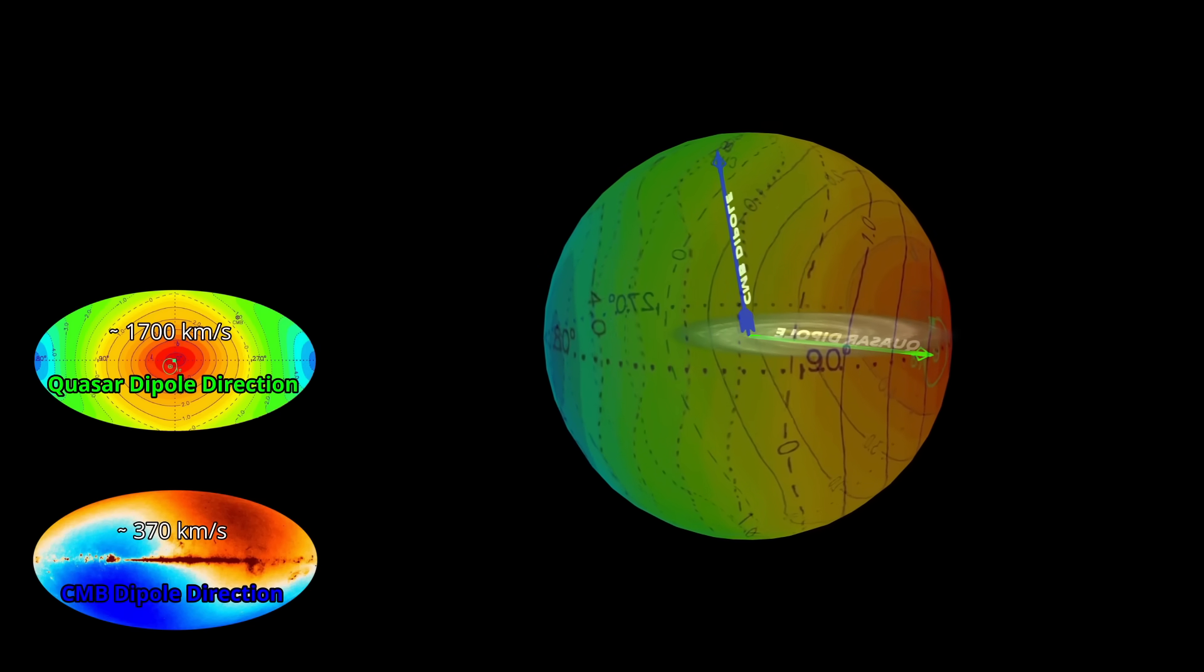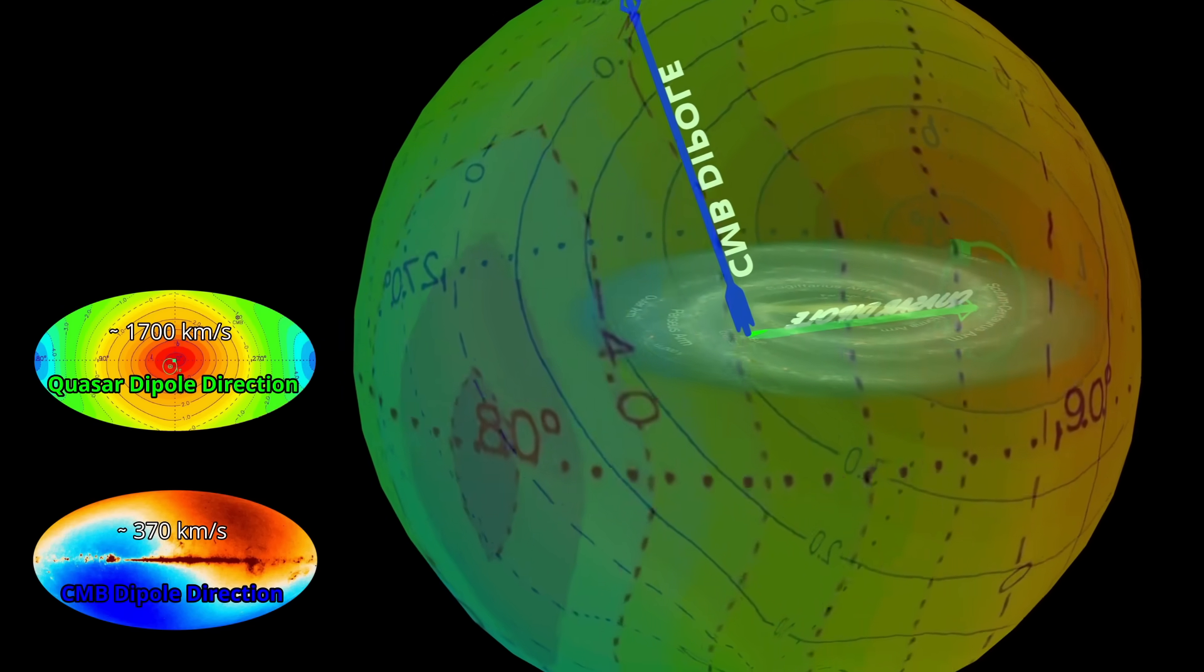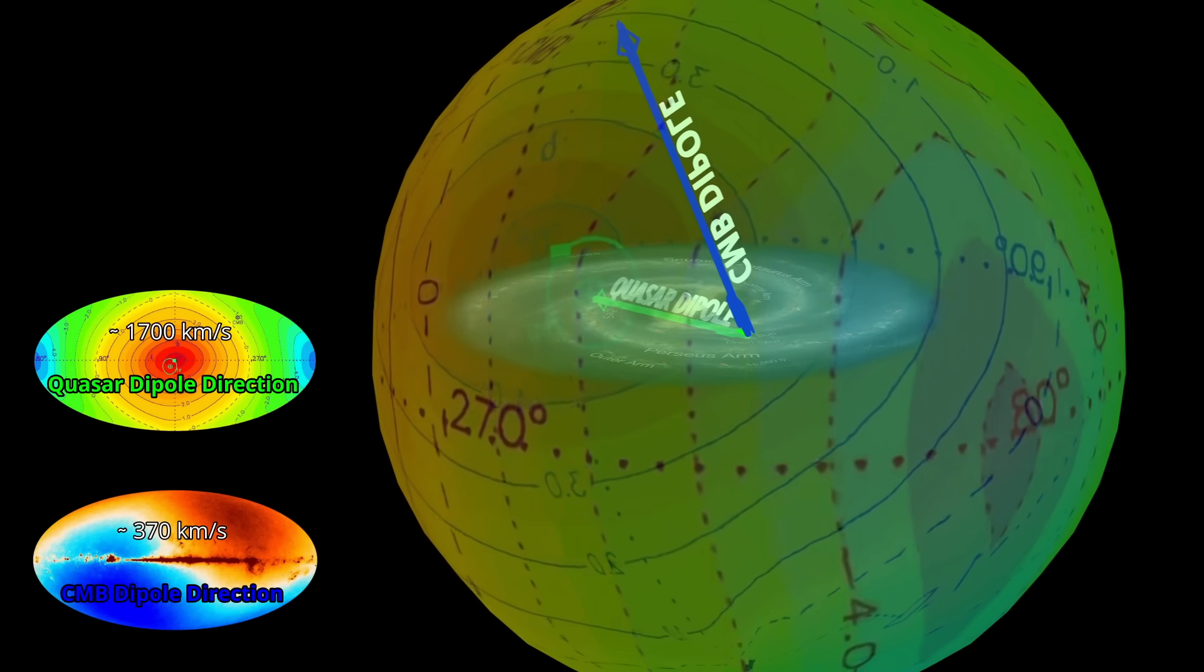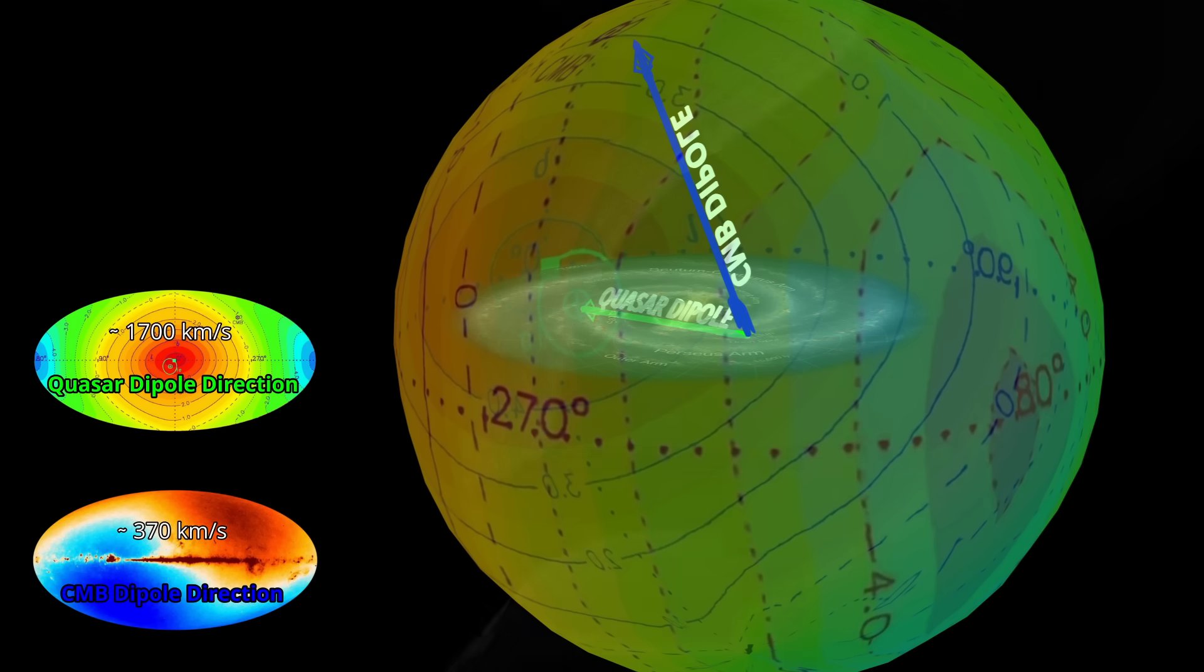Could it be coincidence? Possibly. But if the quasar dipole tracks the flow of matter and the CMB dipole reflects something else, perhaps a radiation field or plasma structure, then their near-orthogonality may not be random at all. It might be a clue that these are two sides of a deeper relation we don't yet understand.